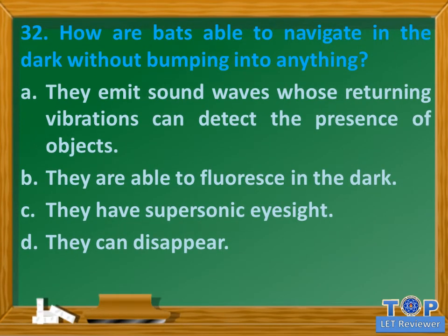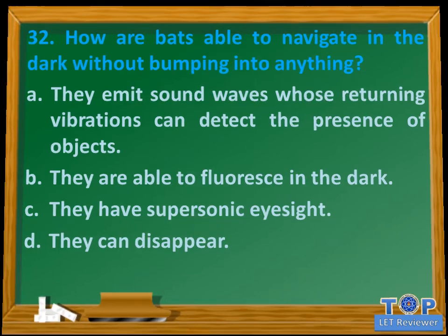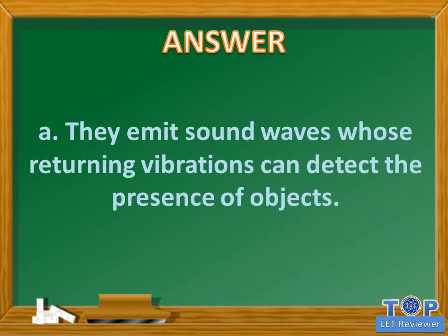Question number 32. How are bats able to navigate in the dark without bumping into anything? A. They emit sound waves whose returning vibrations can detect the presence of objects. B. They are able to fluoresce in the dark. C. They have supersonic eyesight. D. They can disappear. Answer: A. They emit sound waves whose returning vibrations can detect the presence of objects.